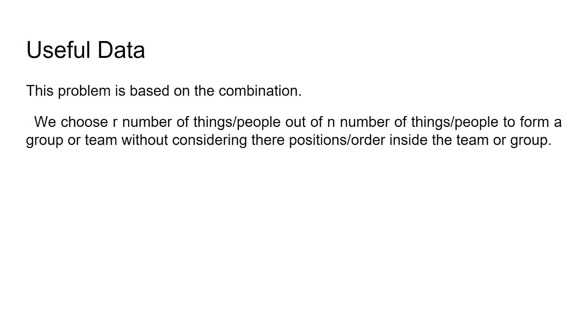The formula of combination is represented as nCr, where n is the total number of available things or people and r is the number of things or people we have to choose out of n. So nCr equals n factorial divided by (n minus r) factorial multiplied by r factorial.